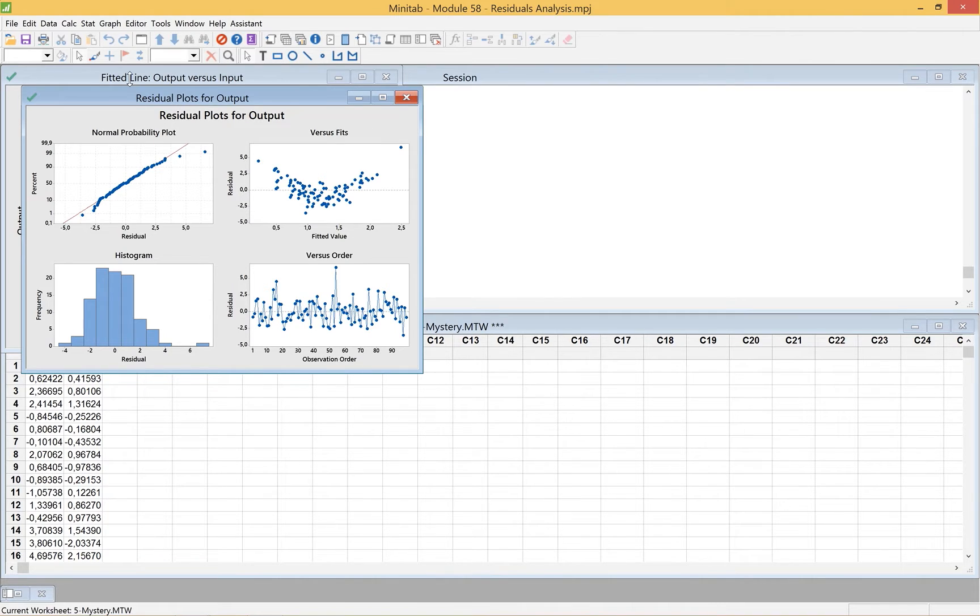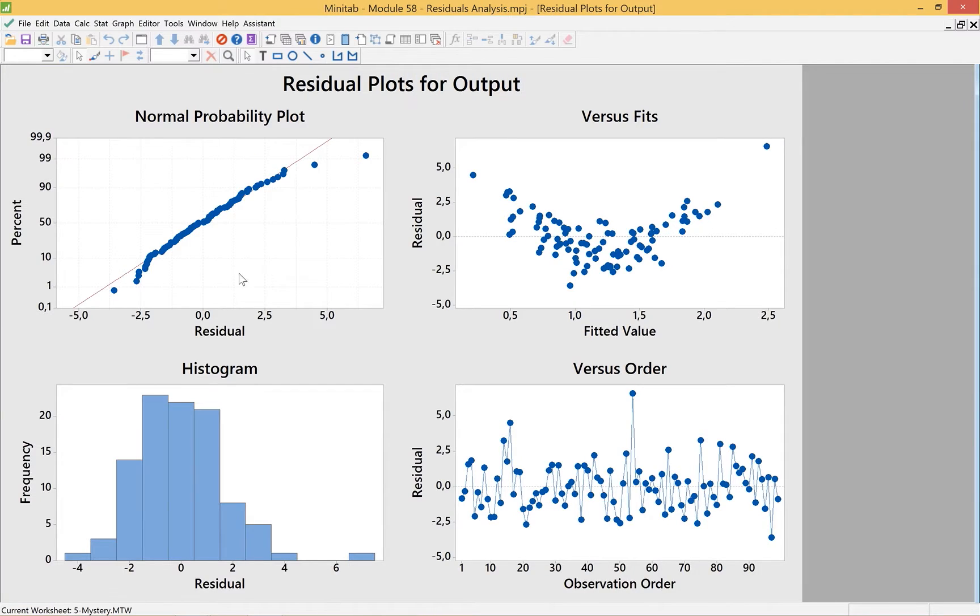We get the output. Notice the first thing we see is the residuals plot. There are four graphs. The first is a normal probability plot. This shows the data, the blue dots, relative to the ideal probability function for a normal distribution, which is that red line. We see that basically it's pretty much normal with a couple of excursions on the outside. Then we take a look at the residuals versus the fit to the data line, and here we see there looks like there's sort of a pattern.